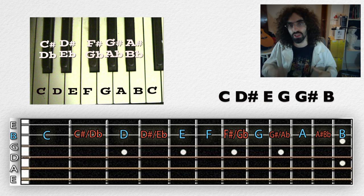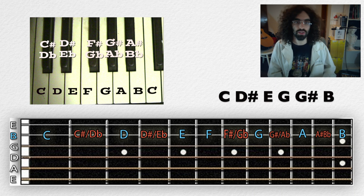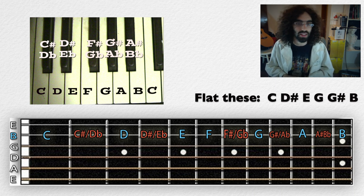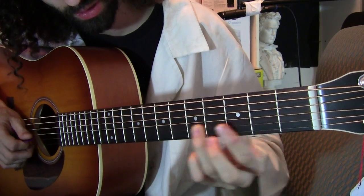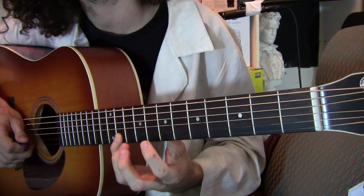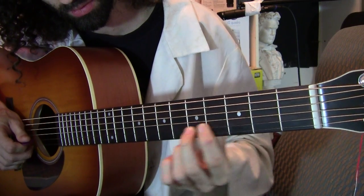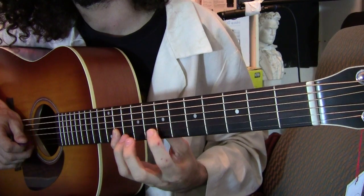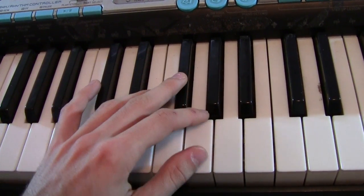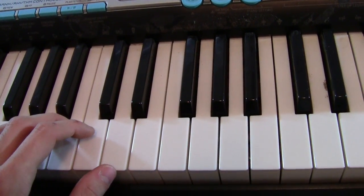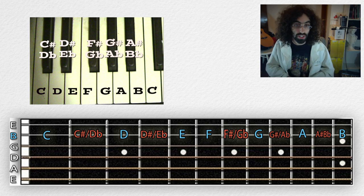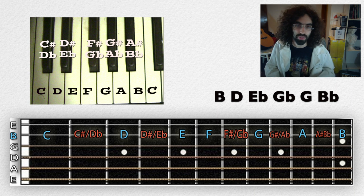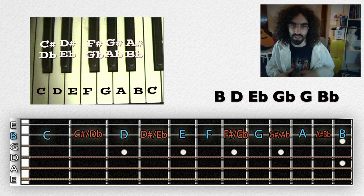Let's go back to the original C, D-sharp, E, G, G-sharp, B and try flatting each of these notes — moving them all down a half step — and finding them on your instrument. Pause and I'll give you the answers. You should have gotten B, D, E-flat, G-flat, G, and B-flat. When you flat C, you get B because there's no note between C and B. Sometimes it is appropriate to call it C-flat, but not yet — we'll get there.